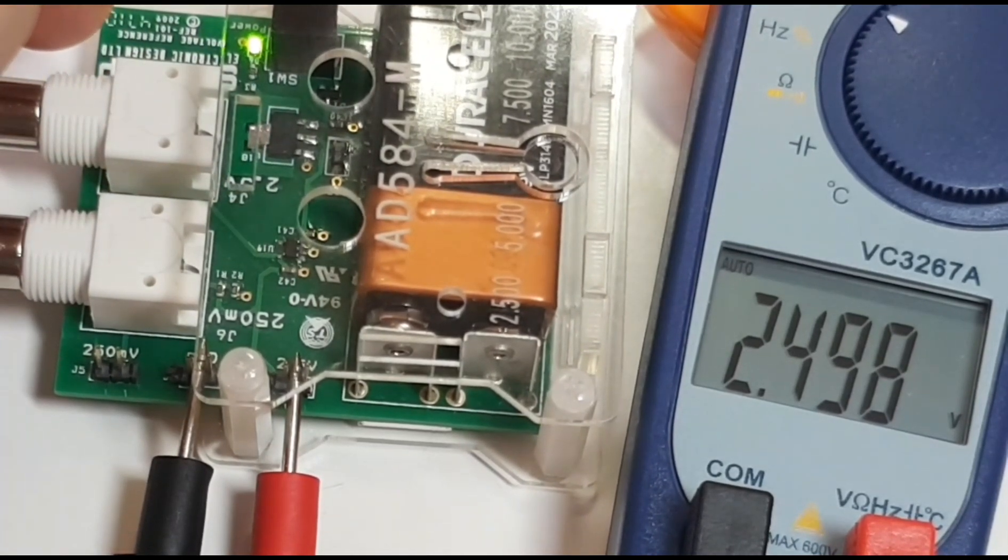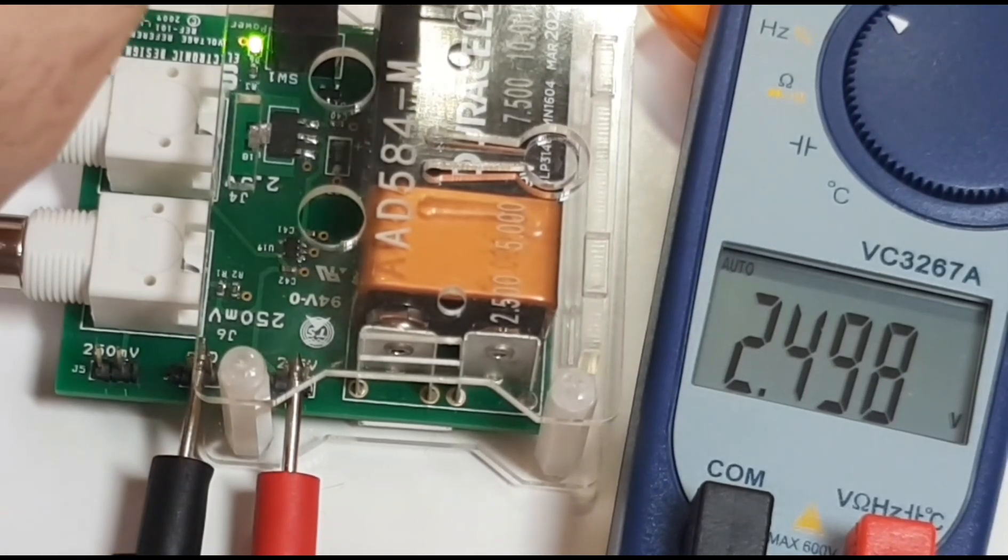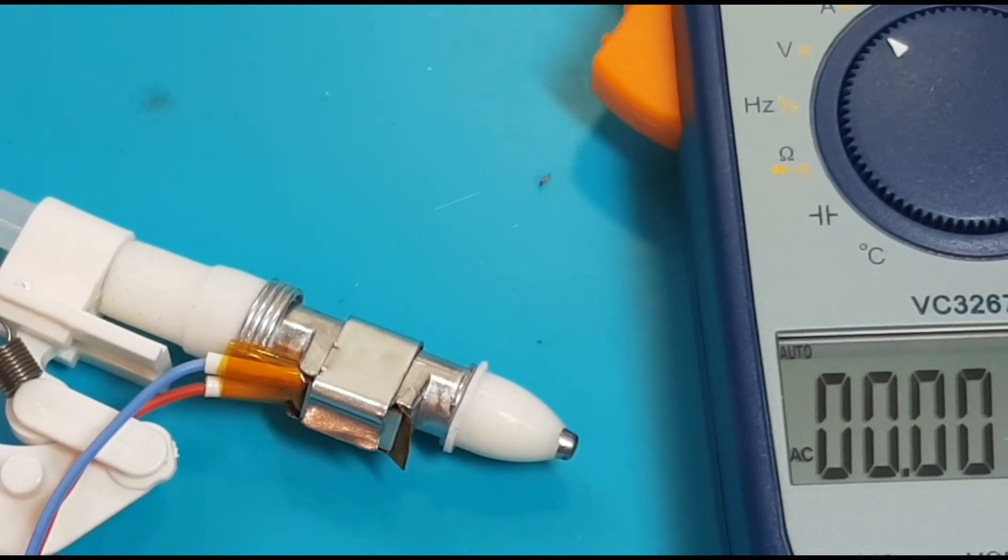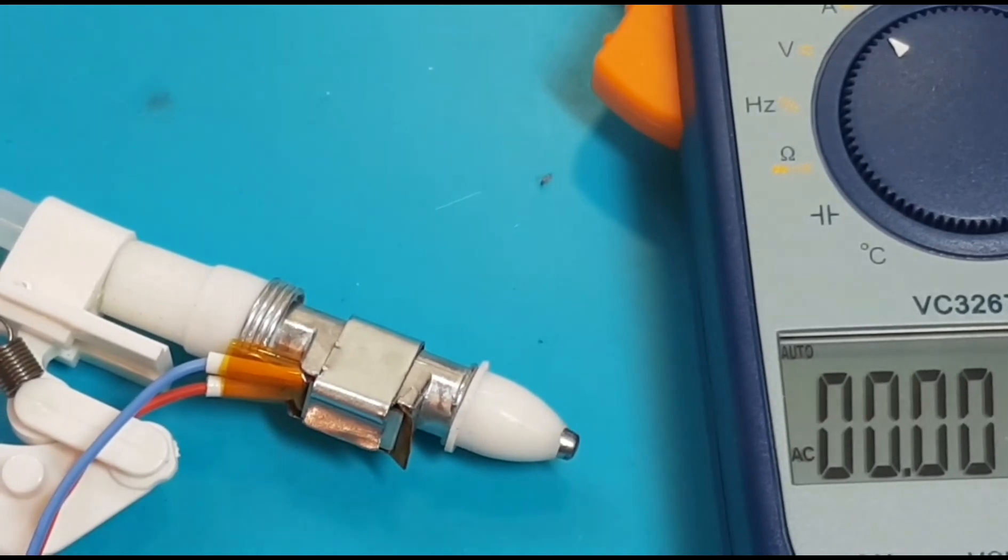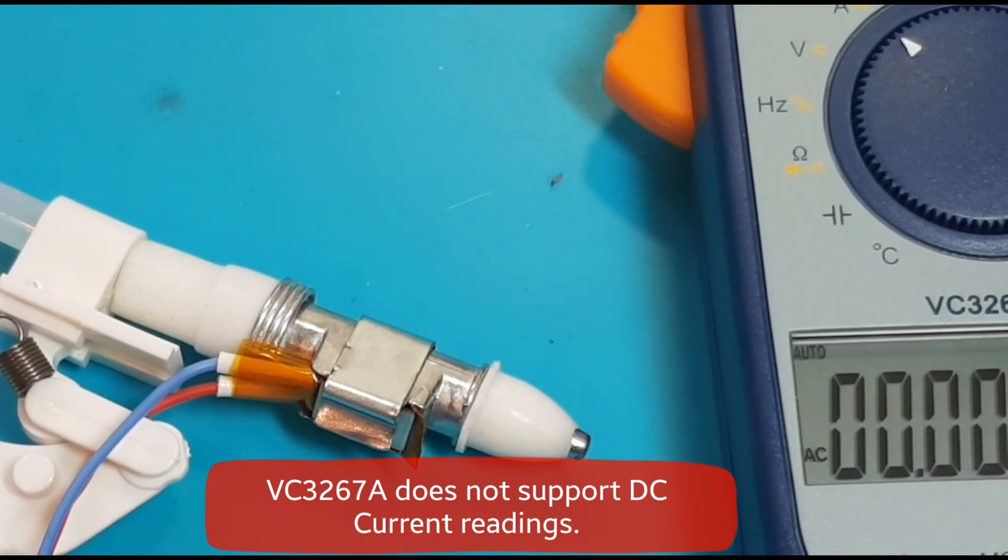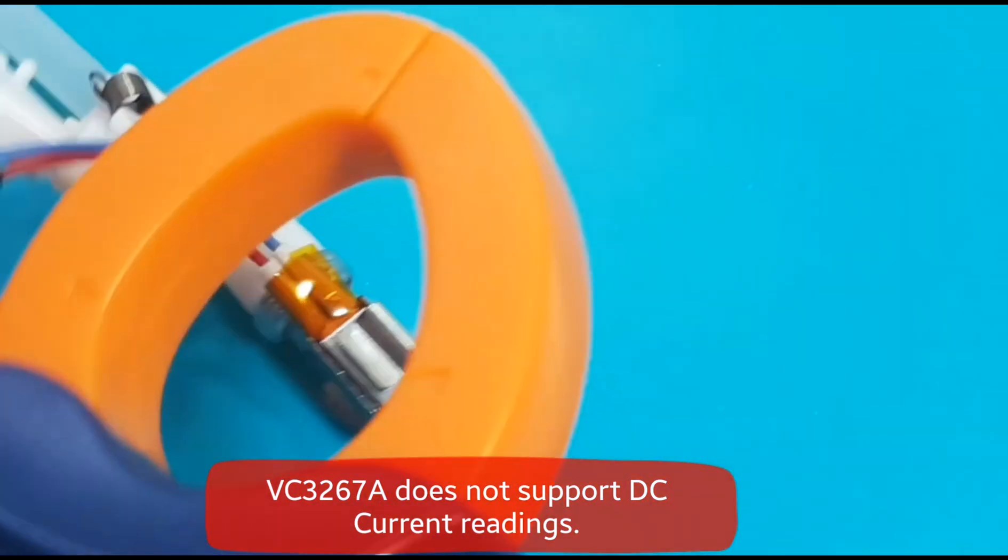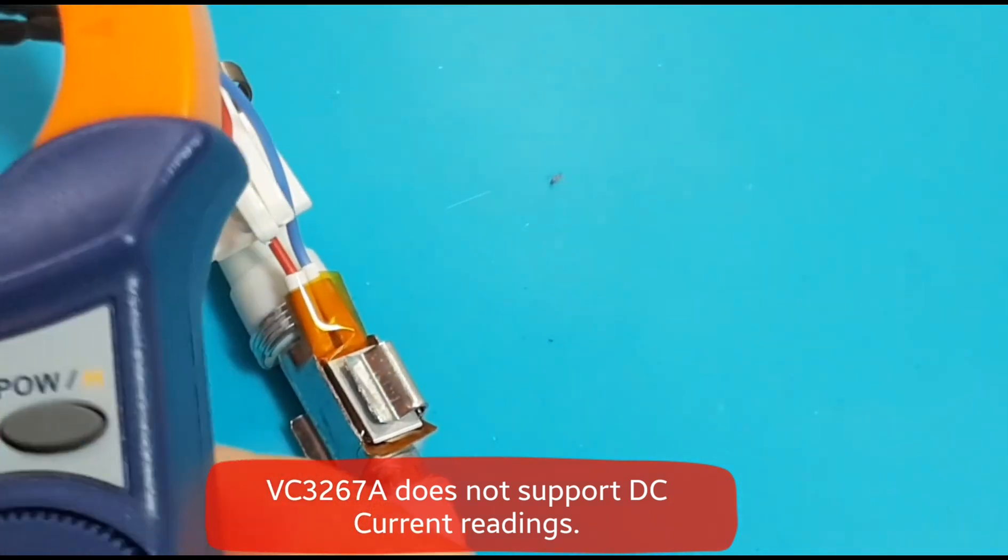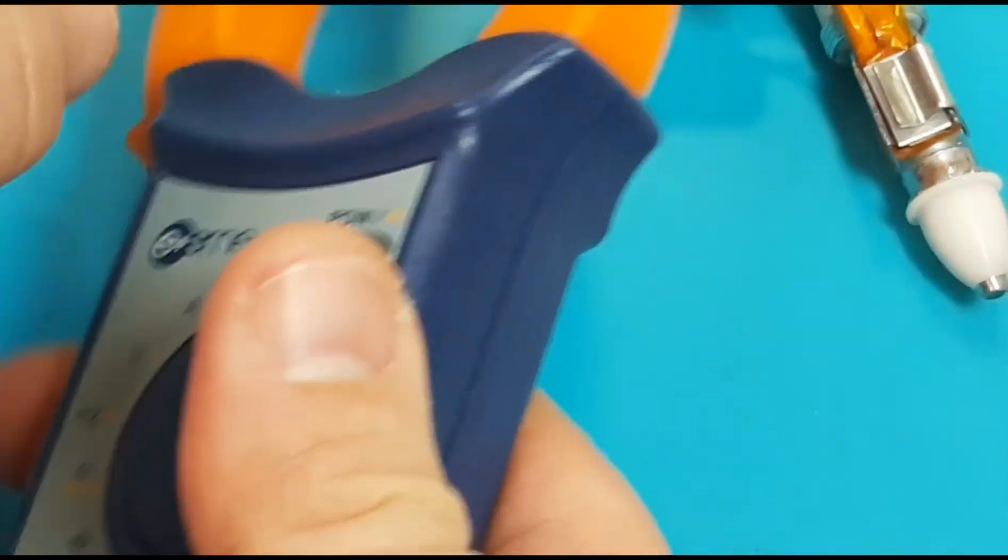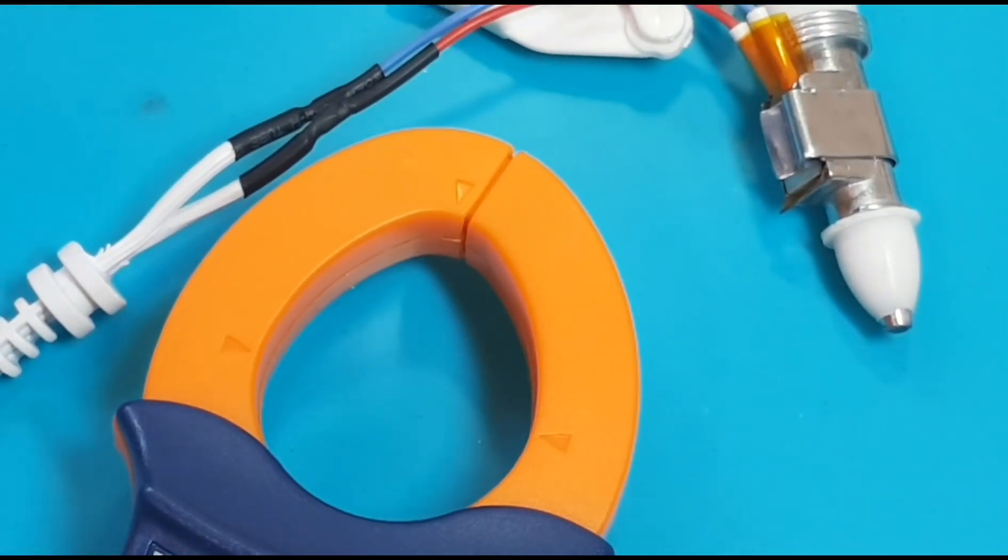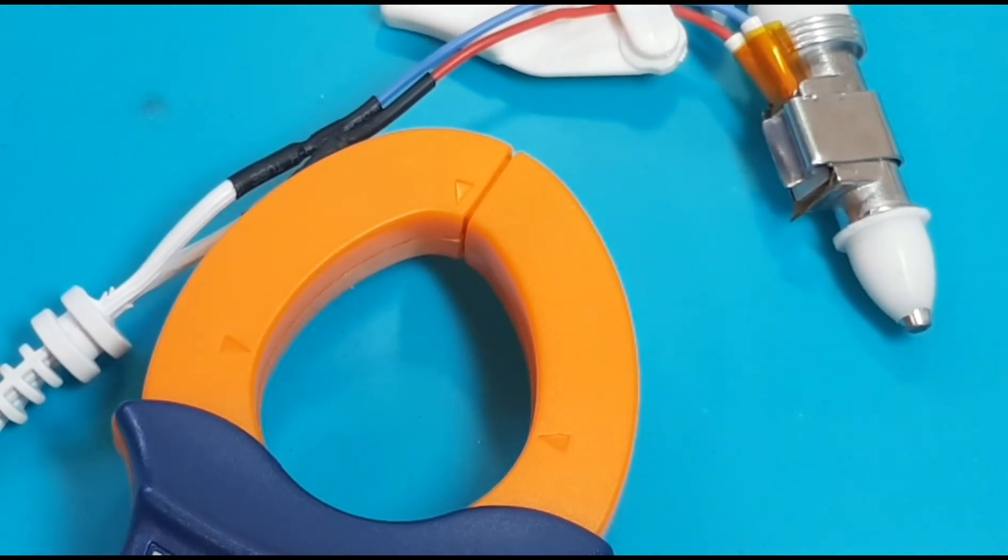So next up is AC current. Now most people when they're using a clamp meter for the first time don't realize that you can't simply take your clamp meter, put it onto your current mode, and go ahead and get a reading. It's just not going to work. So the reason why that mystifies so many people, it's actually relatively simple. It's because the current running through both wires are actually canceling out the induction into the coil.